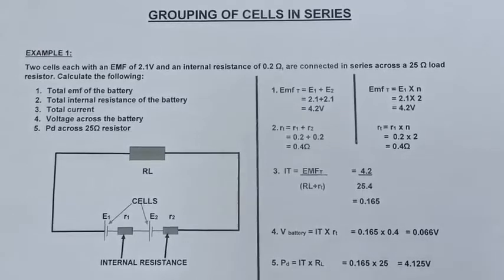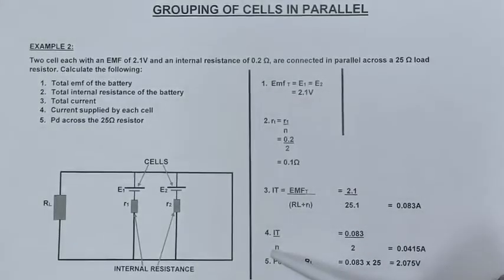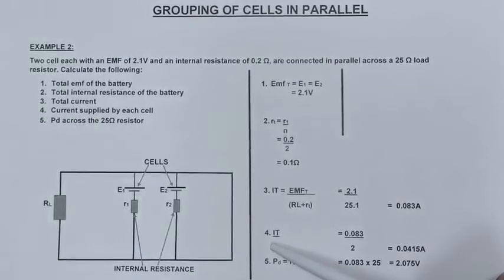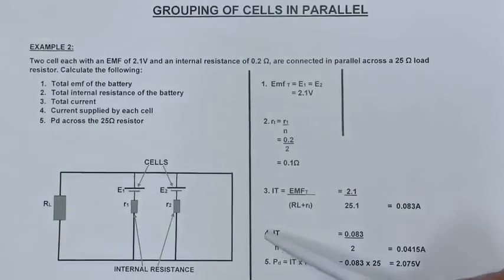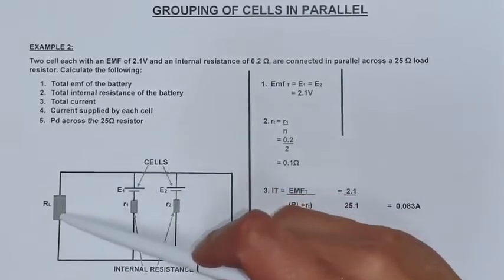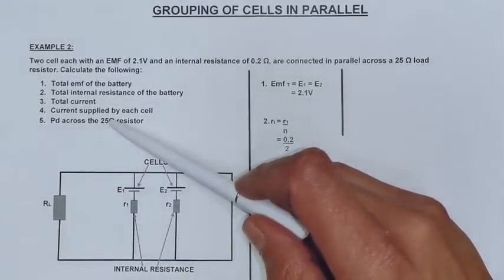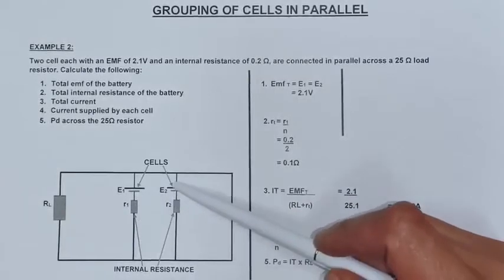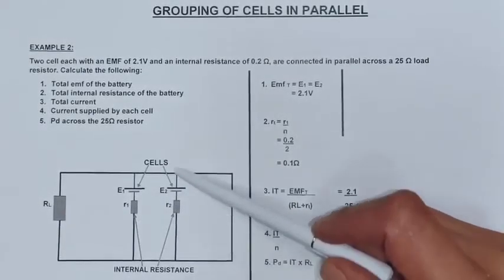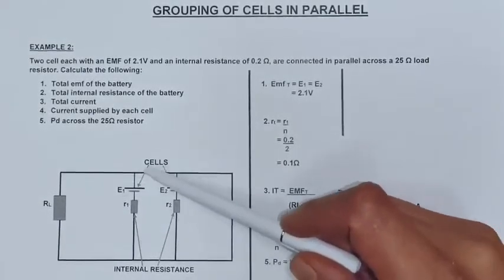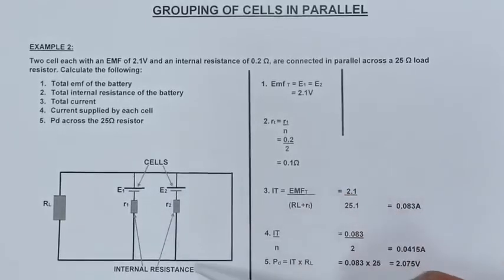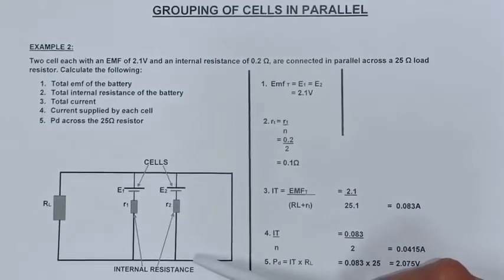Let's go to example number 2, which is grouping of cells in parallel. In example number 2 we are going to have a parallel circuit. Before we go into the example, let's just have a look at the parallel circuit. Here we have a load resistor of 25 ohm and my two cells in parallel forming my battery.